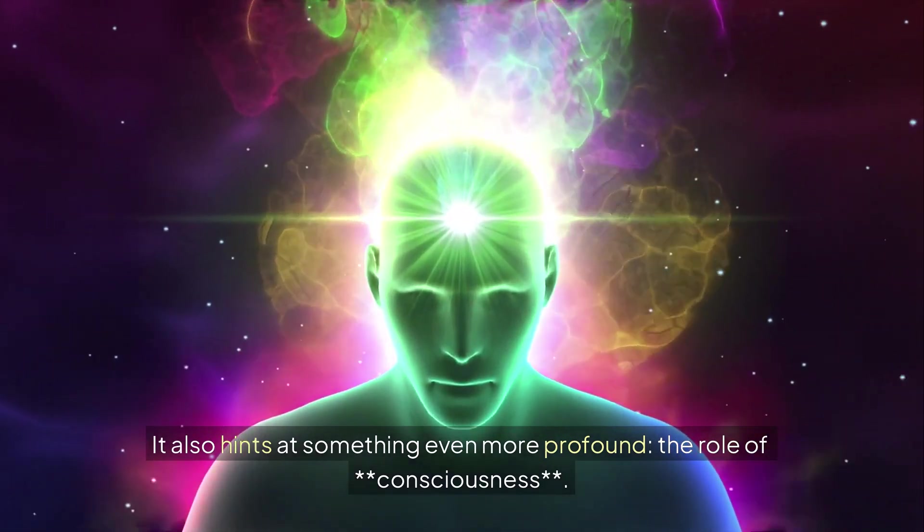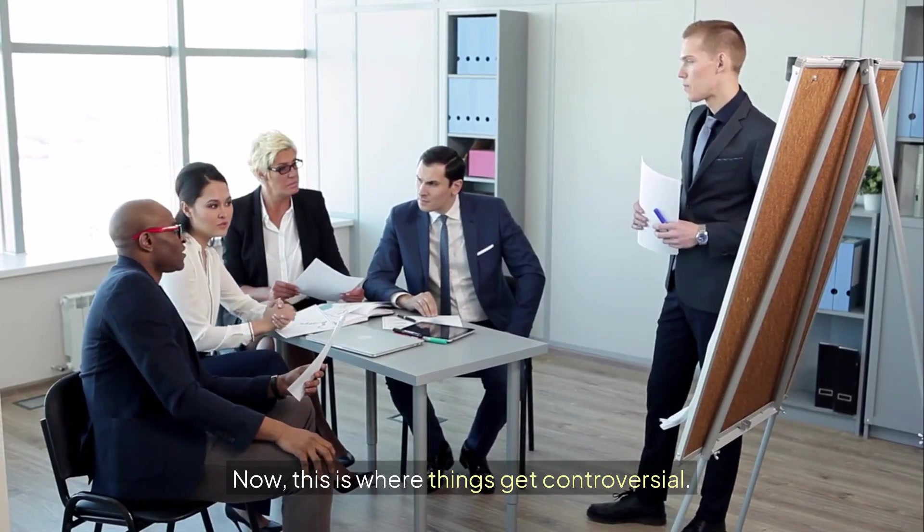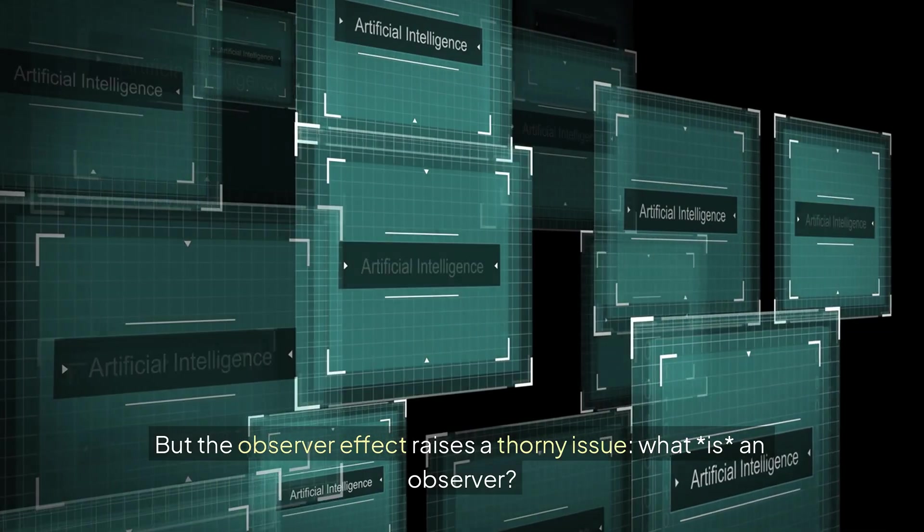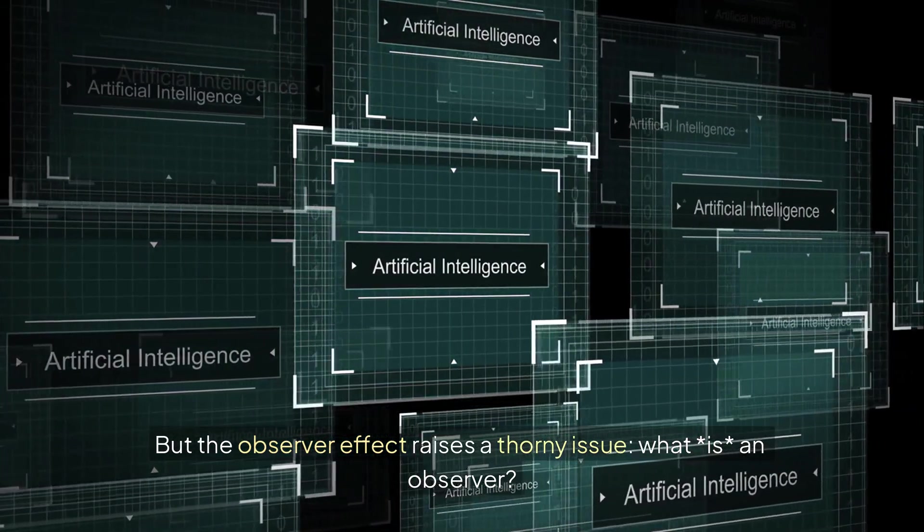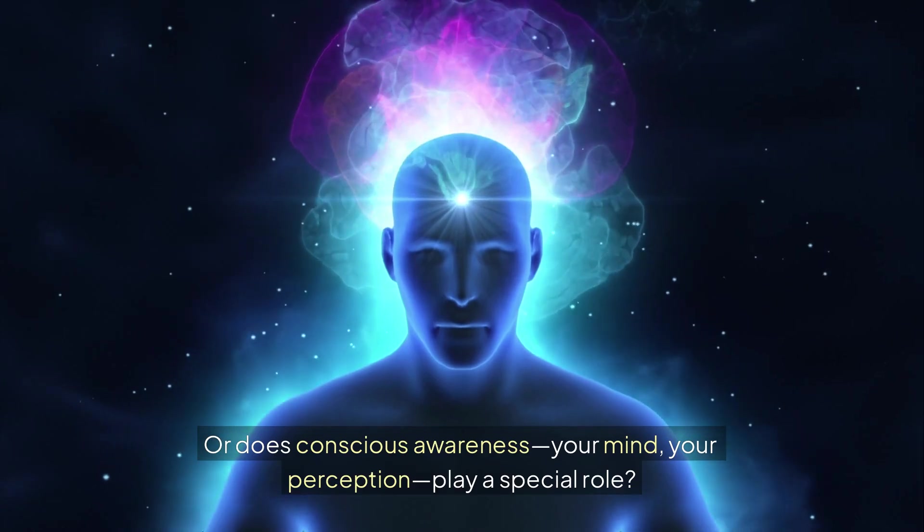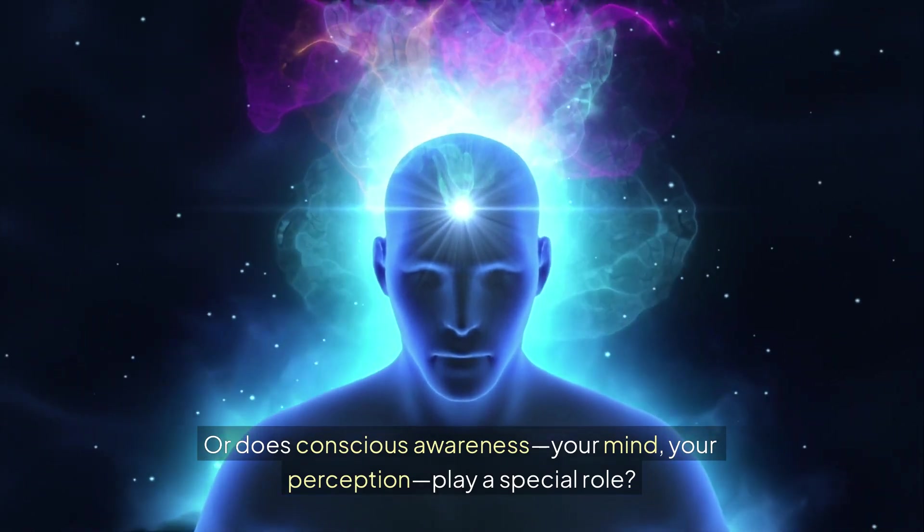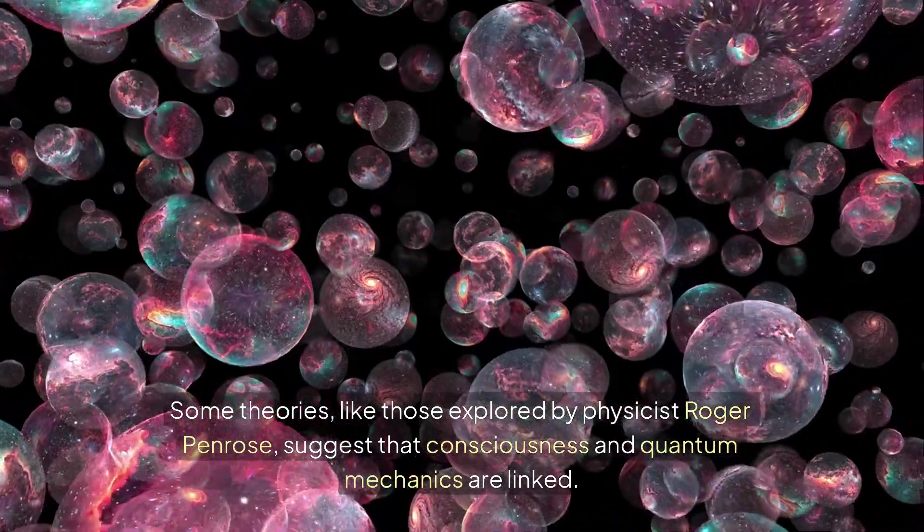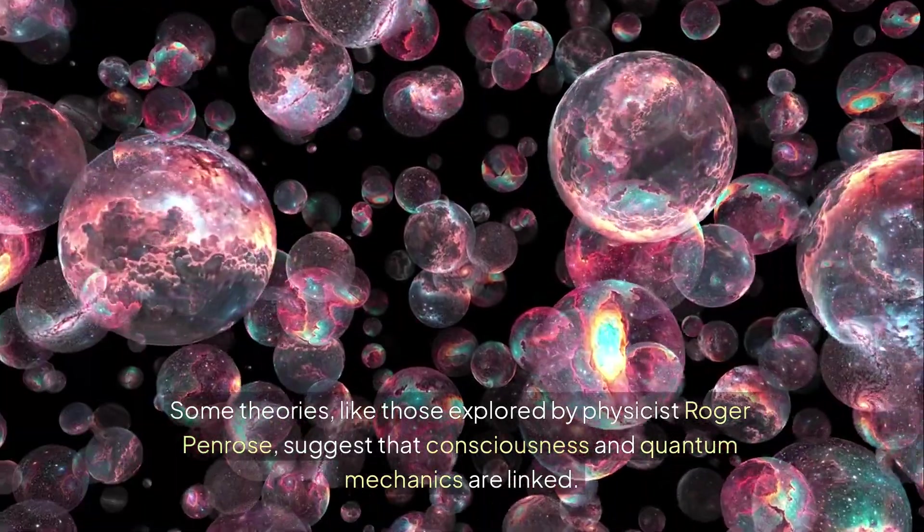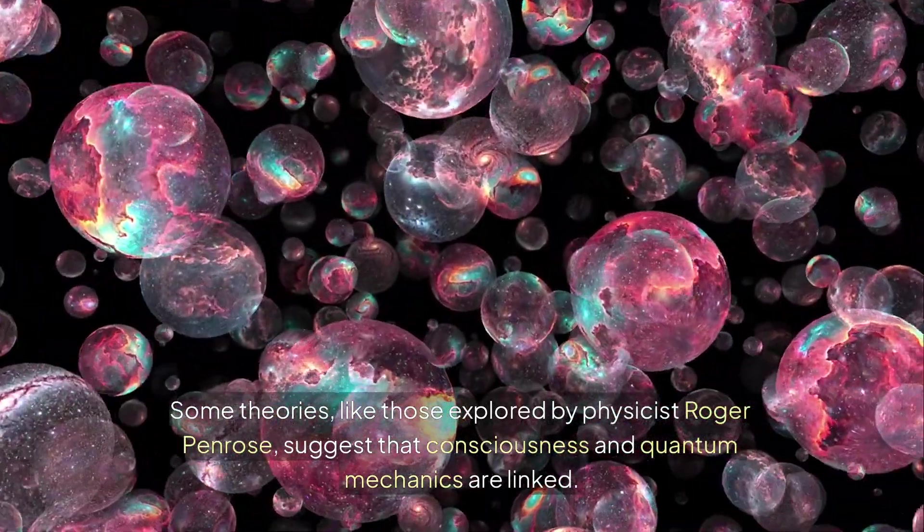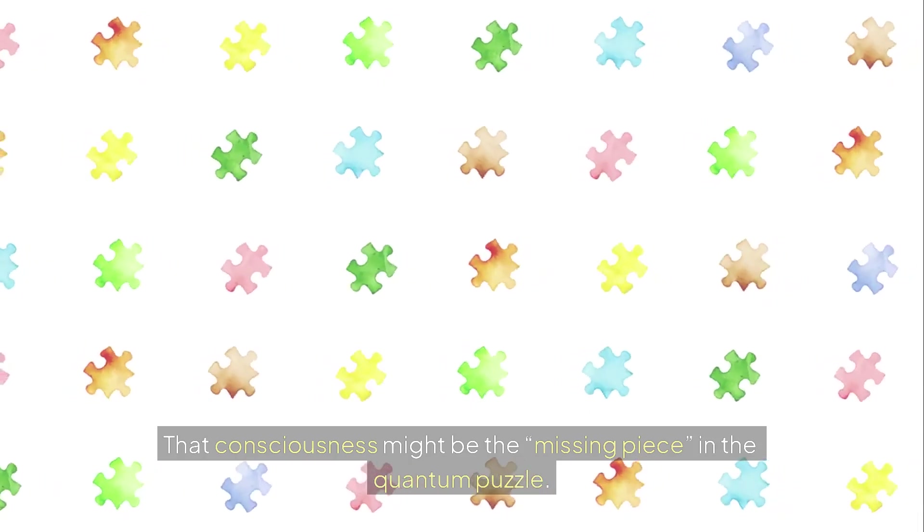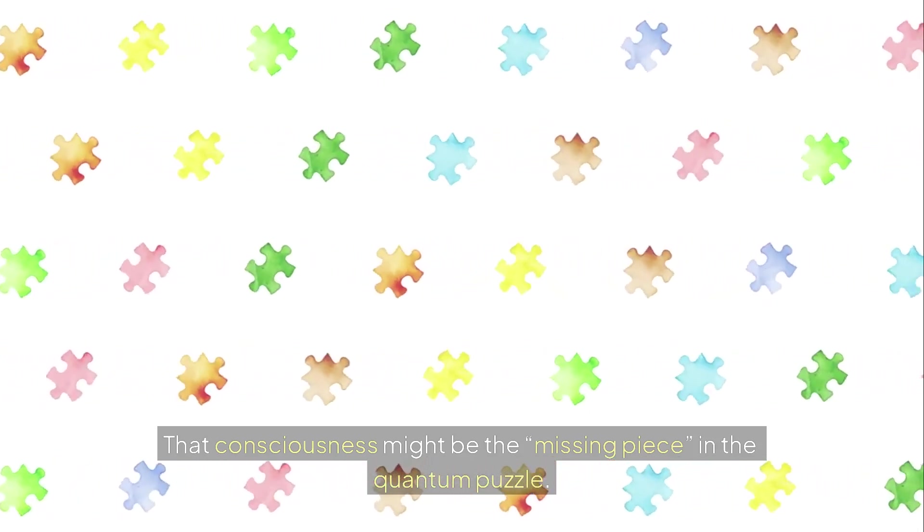It also hints at something even more profound. The role of consciousness. Now this is where things get controversial. Mainstream physics tends to avoid talk of consciousness. But the observer effect raises a thorny issue. What is an observer? Is it any physical system that interacts with another? Or does conscious awareness, your mind, your perception, play a special role? Some theories, like those explored by physicist Roger Penrose, suggest that consciousness and quantum mechanics are linked. That the mind is not a classical machine, but a quantum process. That consciousness might be the missing piece in the quantum puzzle.